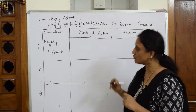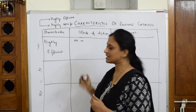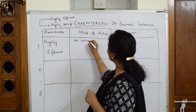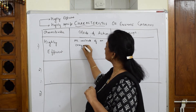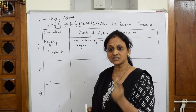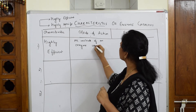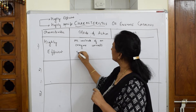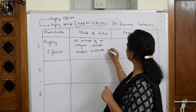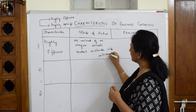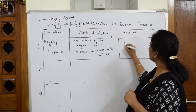What does highly efficient mean? If I take one molecule of an enzyme, what is its mode of action — how is it going to show its effect in a living organism? One molecule of an enzyme is going to convert reactant molecules into millions of product molecules. That fast is the reaction. Let me give you an example: suppose I have to break a peptide bond.